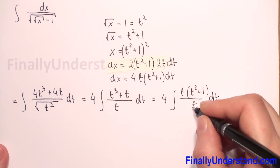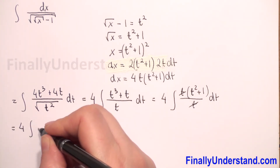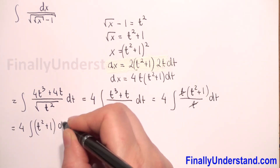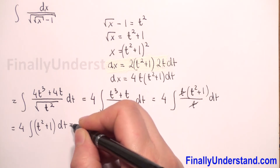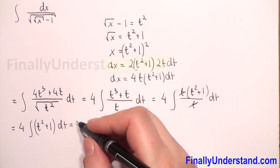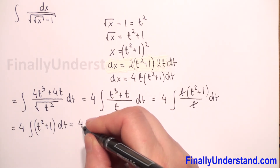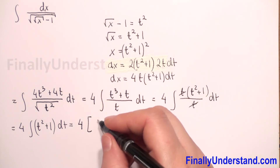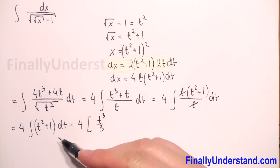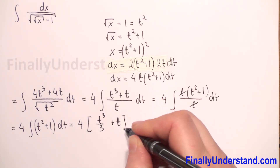Now we can reduce t and t. So we have 4 times the integral of t squared plus 1 dt. This is equal to 4 times, in brackets, the integral of t squared which is t cubed over 3, and the integral of 1 is t, plus constant c.